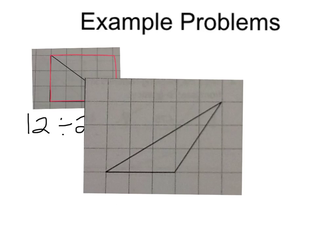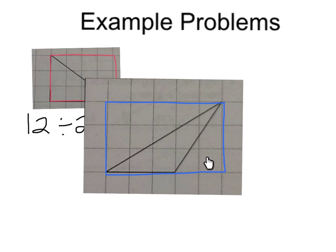Which method is best for calculating the area of this triangle? If you guessed Strategy 2, Subtract the Excess, you are right. First, we will draw a rectangle around the entire triangle. The area of this rectangle is one, two, three, four, five, six, seven, eight, nine, ten, eleven, twelve, thirteen, fourteen, fifteen — it is fifteen centimeters squared. Half of fifteen is seven point five, so the area of the right triangle in this rectangle is seven point five centimeters squared.